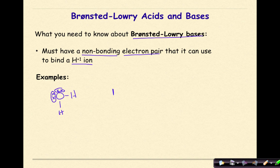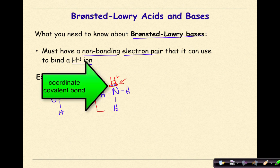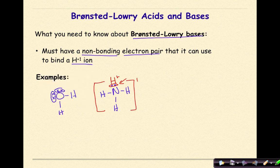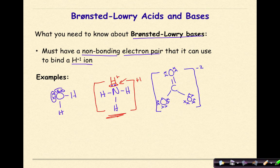Another example is ammonia. Here's a structural diagram of ammonia with its lone pair. A hydrogen ion could come into this lone pair, and now it would have a full octet with its two valence electrons, and the overall charge would be +1 — we'd have the ammonium ion. Another example could be the carbonate ion, which has a lot of lone pairs available that a hydrogen ion could bond to. This is a Bronsted-Lowry base because it can accept a hydrogen ion.